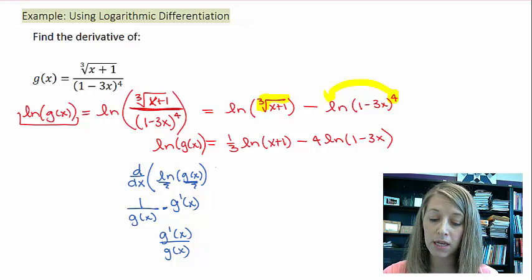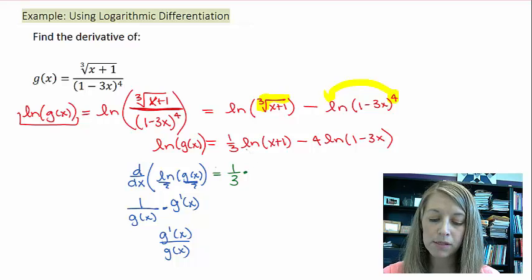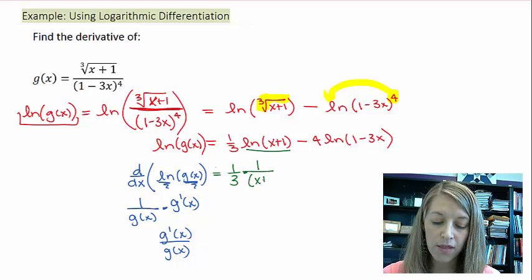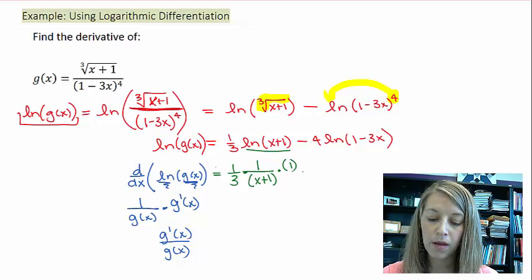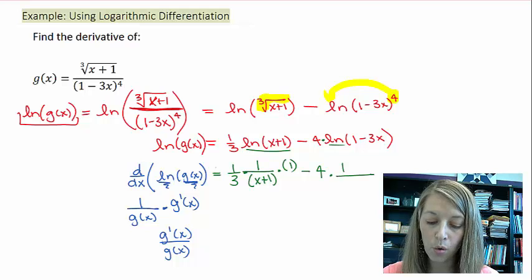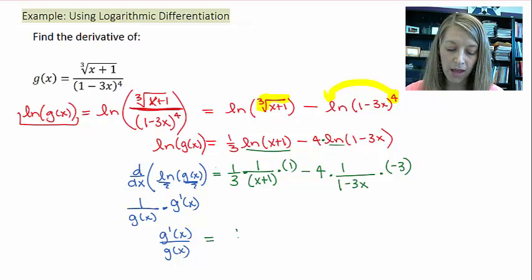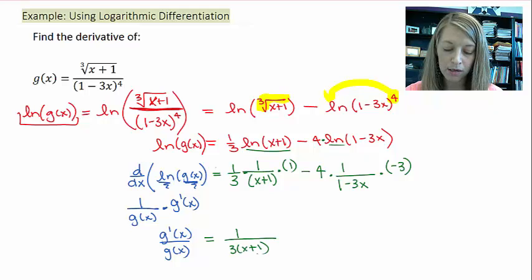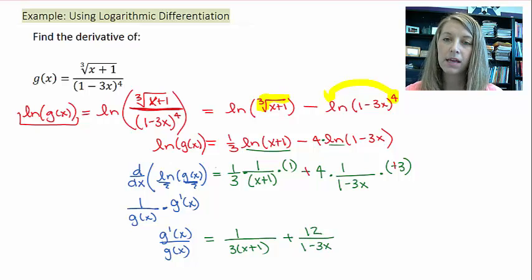And now, I want to take the derivative on the right-hand side of this. So, I can pull my constant out, so that's 1 third, times the derivative of this. Well, that's 1 over that. And the chain rule says times the derivative of the inside. Well, the derivative of x plus 1 is just 1. Minus my constant, I can hold off to this side. The derivative of natural log is 1 over that times the derivative of the inside. So, the derivative of 1 minus 3x is just a negative 3. So, let me simplify that. So, I have 1 over 3 times x plus 1 in my first piece. Plus 12, because these two negatives cancel out, over 1 minus 3x in my second piece.